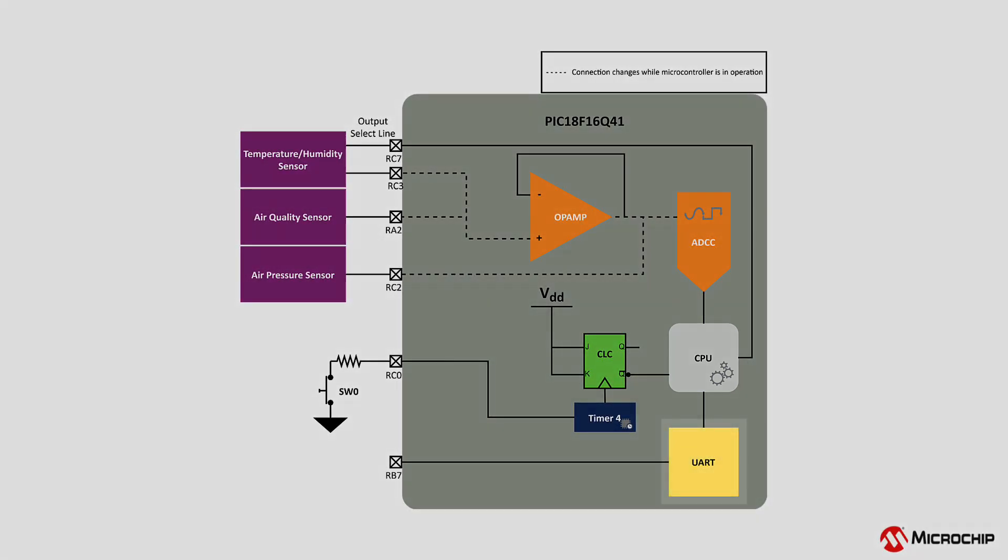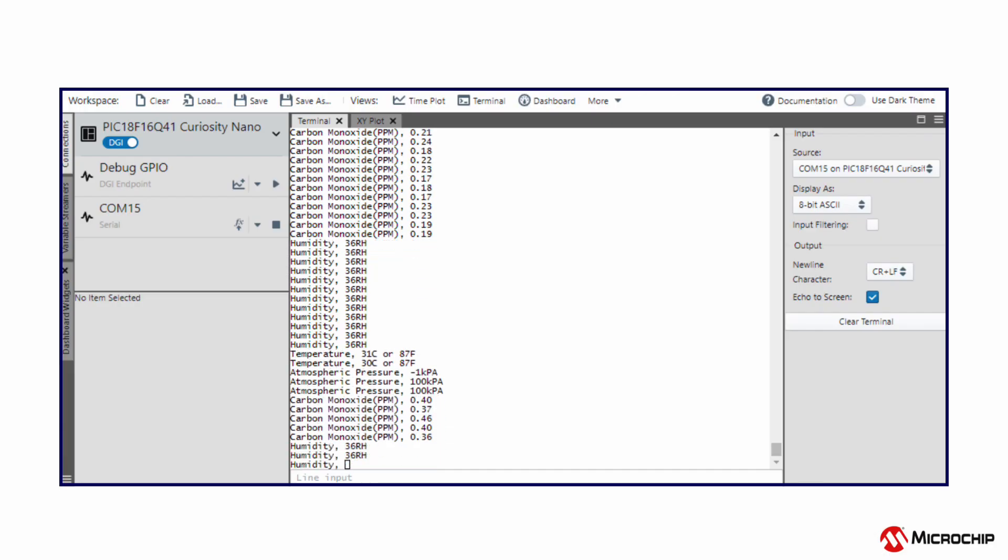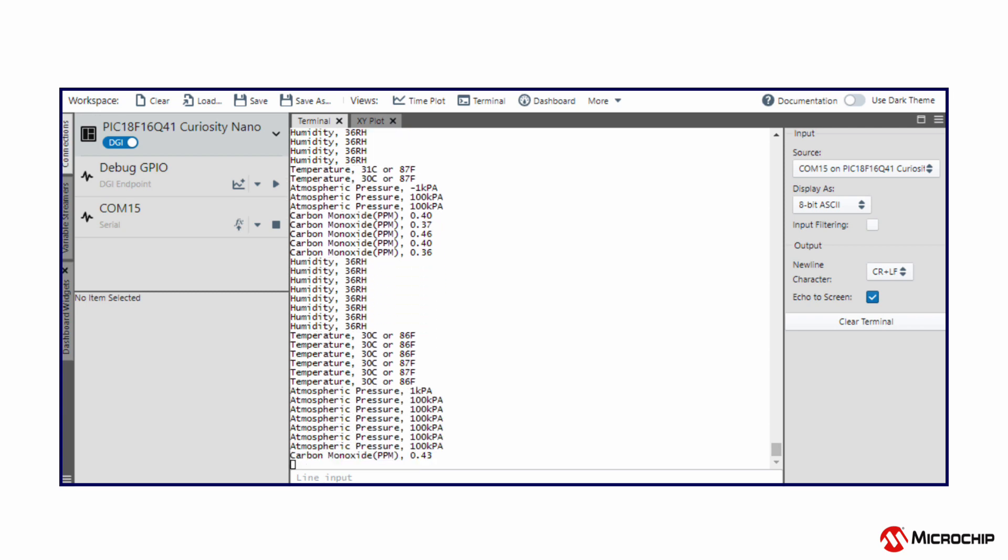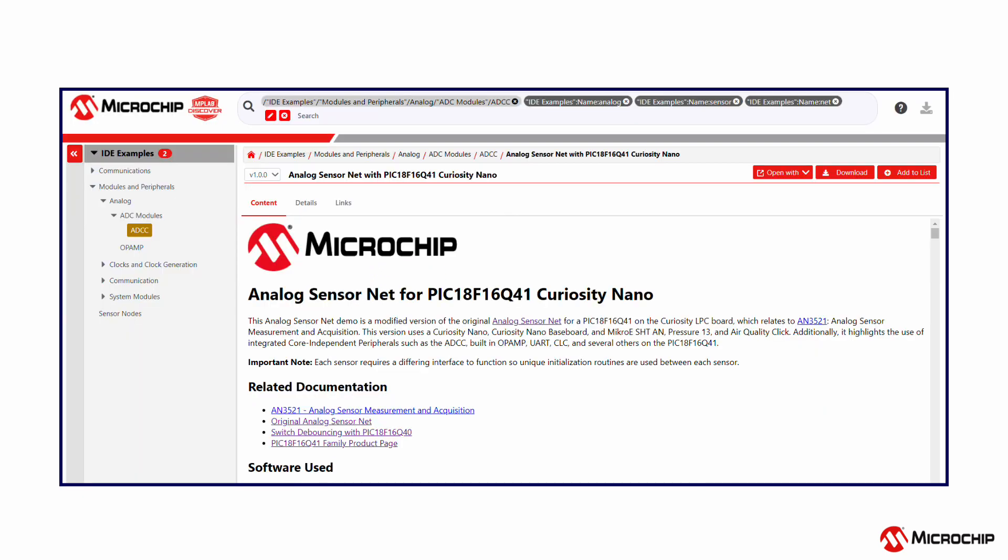The output of the sensor net is sent using the Q41's UART modules and can be read using the Microchip Data Visualizer or any terminal program. For instructions and project code, please go to Microchip Discover or the GitHub post linked below.